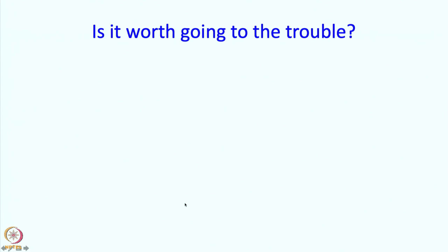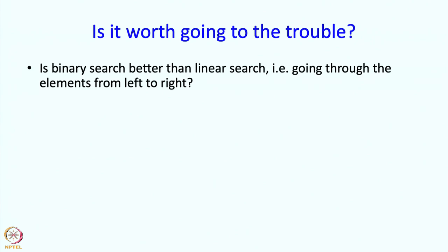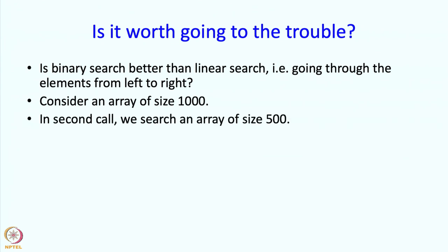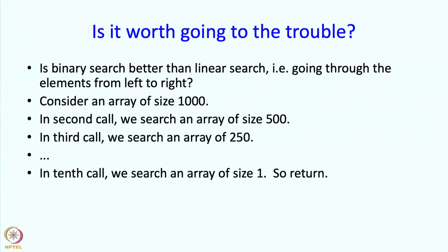So now let us analyze this and check if this is worth going to the trouble. In other words is binary search better than linear search, just going through the elements from left to right. If we consider an array of size 1000, in the second call we search an array of size 500, in the third call we search an array of size 250 and so on. Every time the size of the array we are searching is roughly halving. So that means in the tenth call, if you do this ten times you will get to an array of size 1. So at that point we do not recurse further and we can just return. So time taken in this case is about 10 calls worth of work and each call is fairly simple. As opposed to that in linear search we would do 1000 comparisons.